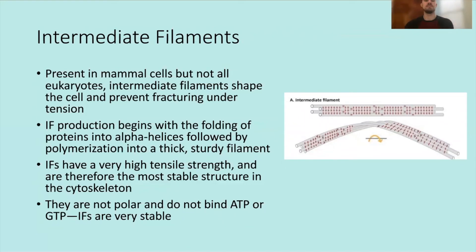Intermediate filaments are present in mammalian cells but not all eukaryotes. They shape the cell and prevent fracturing under tension. Intermediate filament production begins with the folding of proteins into alpha helices, followed by polymerization into a thick, sturdy filament. Unlike the other two filaments, they are not readily polymerizing and depolymerizing. Intermediate filaments have very high tensile strength and are the most stable structure in the cytoskeleton. They are non-polar and do not bind ATP or GTP.